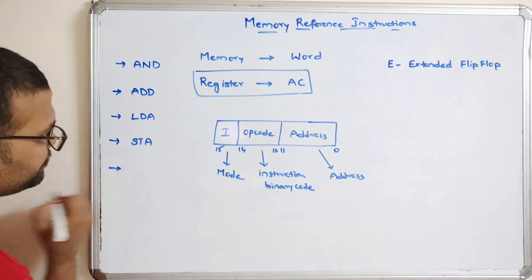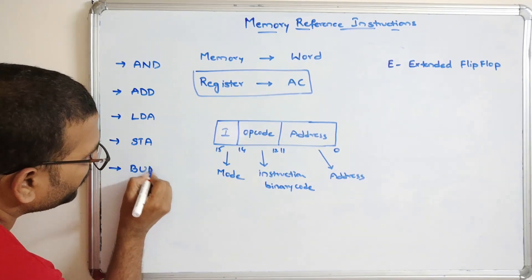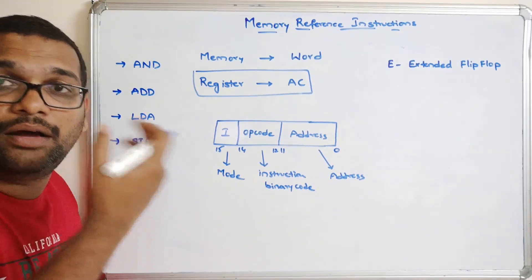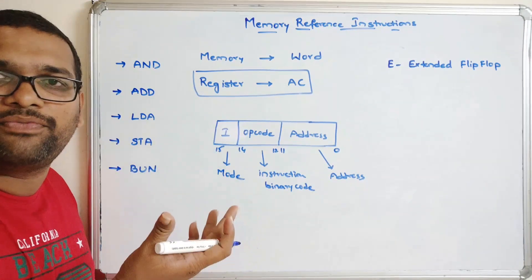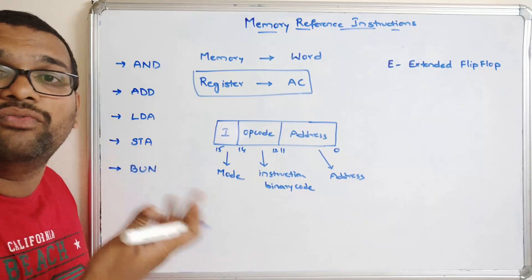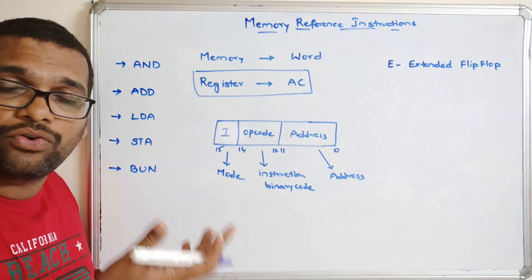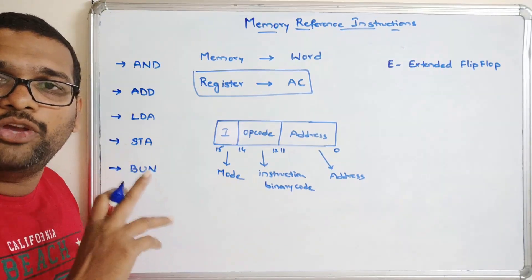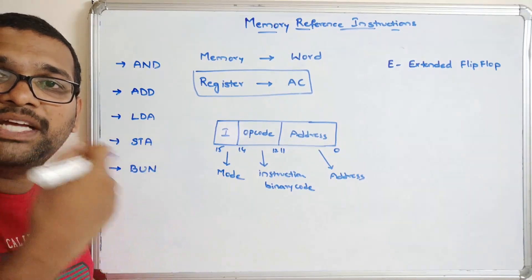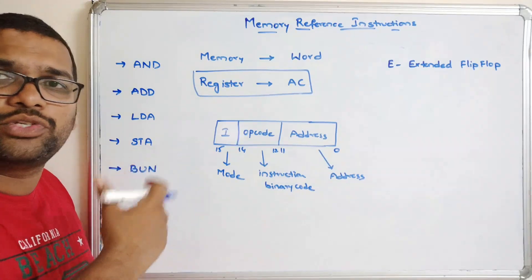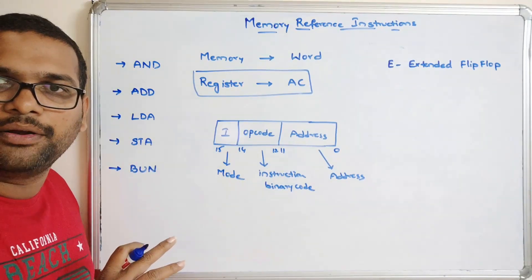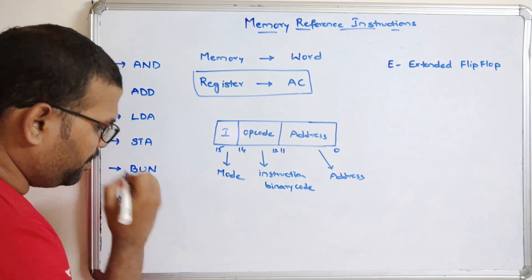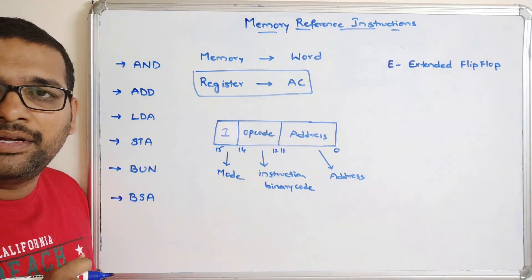STA means store, which stores the content of the accumulator to the word (memory). Next is BUN — branch unconditional. Normally the flow of control is sequential, one instruction after another. BUN allows instructions that are not in sequence to also be executed, breaking the sequential flow based on a condition. The next instruction is BSA — branch and save return address.